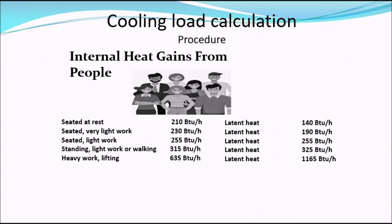The latent heat increases dramatically because of greater perspiration required to maintain body temperature. The amount of sensible and latent heat released by the body varies with age, physical size, gender, type of clothing, and level of physical activity. Based on the occupancy heat gain equivalency table, seated at rest is 210 BTU/hr with a latent heat of 140 BTU/hr.